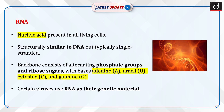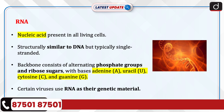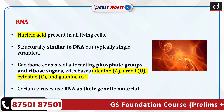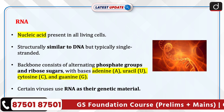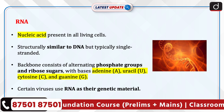Now let's discuss RNA. RNA is a nucleic acid present in all living cells. It is structurally similar to DNA, but typically single-stranded. Its backbone consists of alternating phosphate groups and ribose sugars, with bases adenine (A), uracil (U), cytosine (C), and guanine (G).